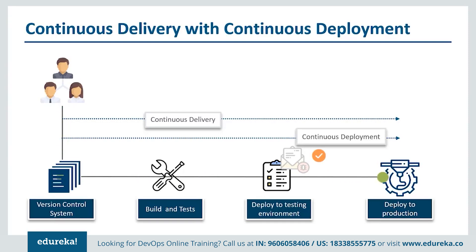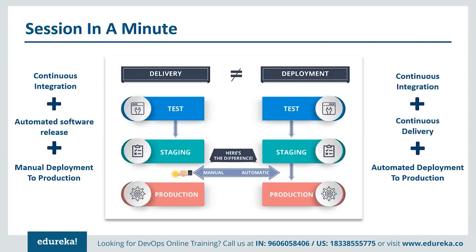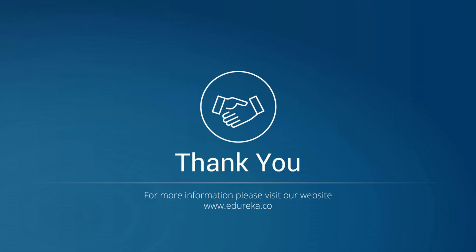Hopefully that distinguishes the two: continuous delivery is a capability you must have, and continuous deployment is an option you might choose based on the kind of product you have. In short, continuous delivery equals continuous integration plus automated release of the software plus manual deployment to production. Continuous deployment equals continuous integration plus continuous delivery plus automated deployment to production. That's all for today's session. Thank you and have a great day.